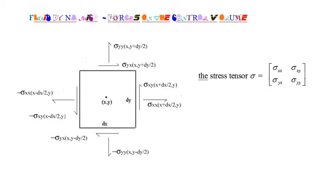Now we will derive the right-hand side of the momentum equations, that is, the equations for the limits as the control volume goes to zero of the x-direction and y-direction forces acting on the control volume.